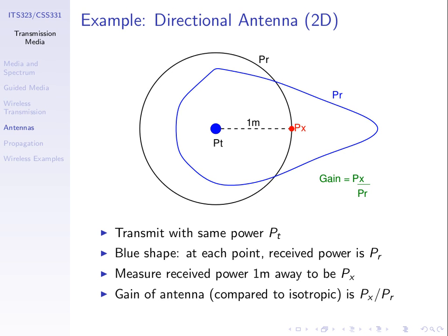We can say the blue antenna has some gain relative to our isotropic antenna. The gain of the blue antenna in this direction is by how much larger PX is than PR. We could also express that gain on a logarithmic scale — take the logarithm and multiply by 10. Now consider the opposite direction: you stand one metre away from the antenna in the opposite direction and measure the signal strength from the blue antenna to be PY. For the black isotropic antenna it's PR; for the blue one it's PY.